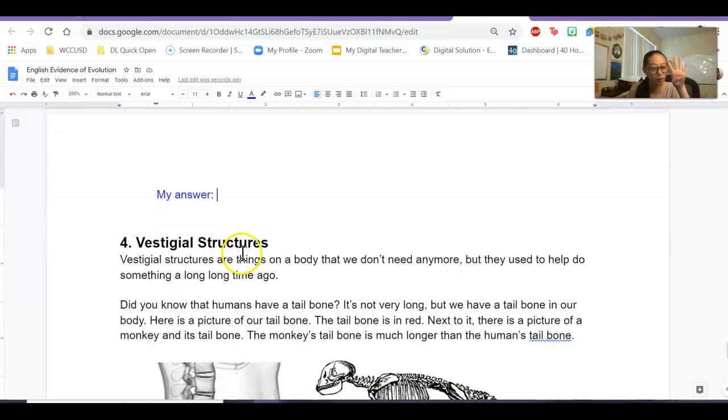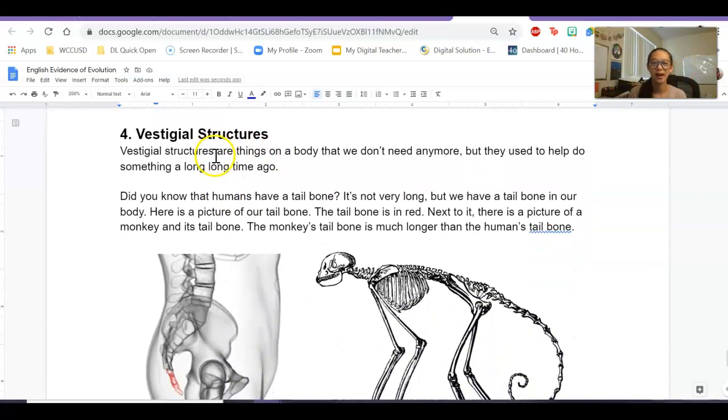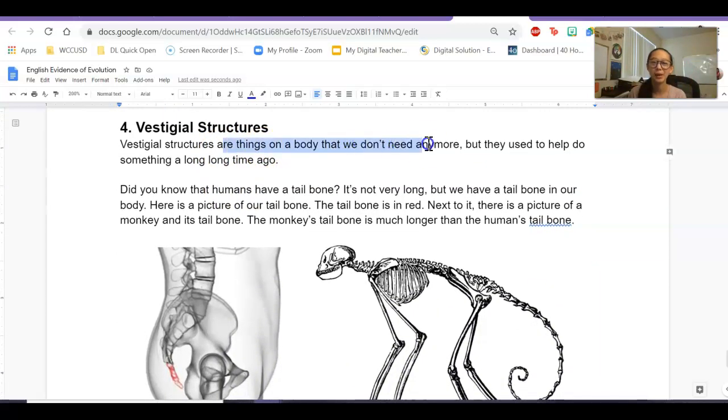And then part four is about vestigial structures. So this is things on a body that we don't need anymore, but they used to help us do something a long time ago. And I mean a really, really long time ago.